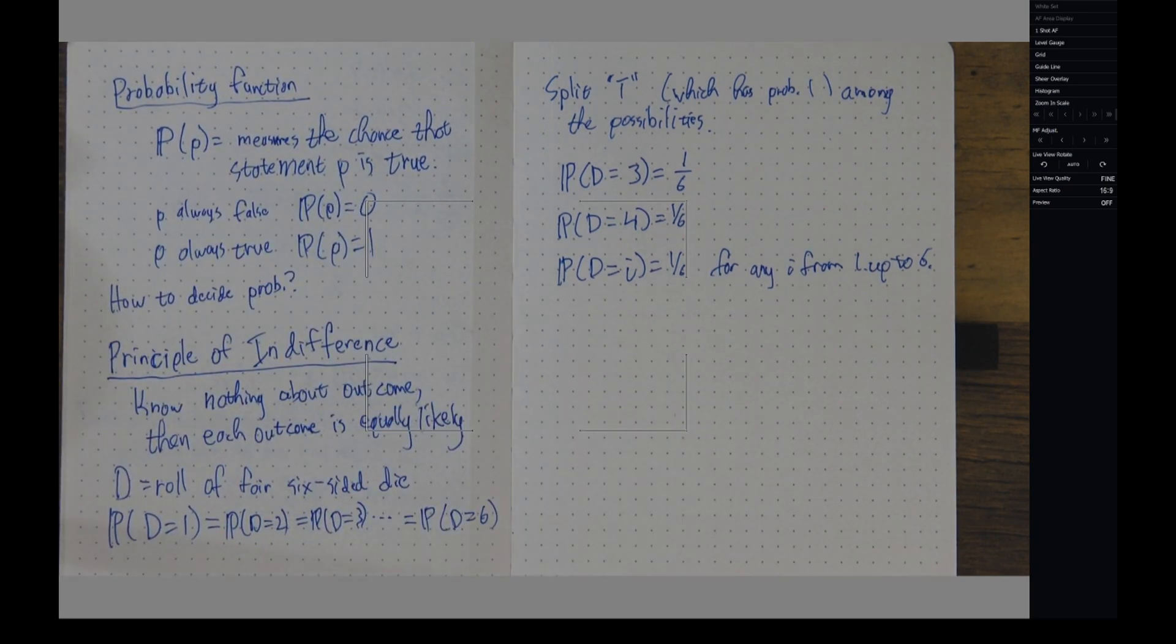Which says if we know nothing at all about the outcomes, then each outcome is equally likely. And that helps us find probabilities for simple problems where we have no knowledge about which outcome is likelier than any of the others.